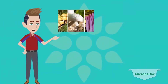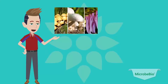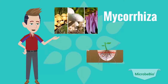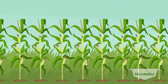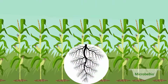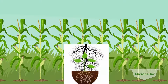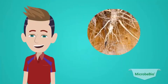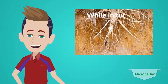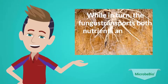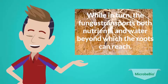Secondly, we will look at beneficial fungus like mycorrhiza and its functions. Like bacteria, mycorrhiza is also known in a symbiotic relationship with the plant's roots. The roots of the plant provide the carbon that the fungus needs to grow, while in return the fungus transports both nutrients and water beyond which the roots can reach.